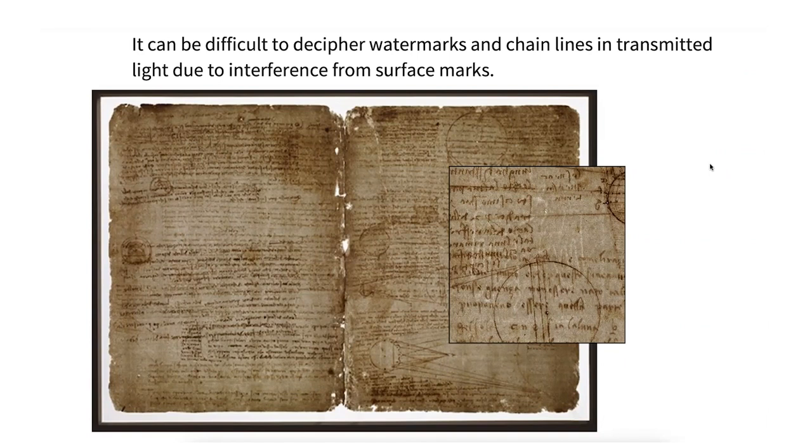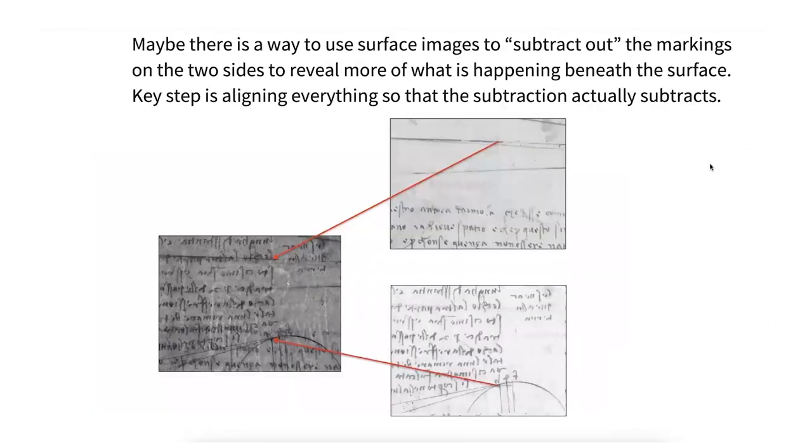And wouldn't it be nice if we could somehow do some sort of processing on this to get rid of all this junk here that's obscuring our view of the watermark. So here's sort of the idea for that little portion of the Lester 1 eagle watermark. So here's the corresponding surface image, just a photograph of that page, the back of the page. Here's the photograph of the front of the page.